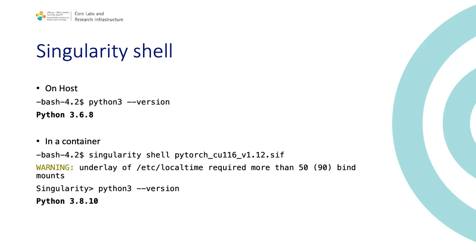Here is a practical example: on the host I check the Python version — it's 3.6.8. When I run the Python image I have, I get a different Python version because I'm in a different shell — that's where you start discovering your containerized environment. You can bind-mount the file systems you need. This is equivalent to 'docker run -ti' — and using 'singularity shell' gives you interactive access.